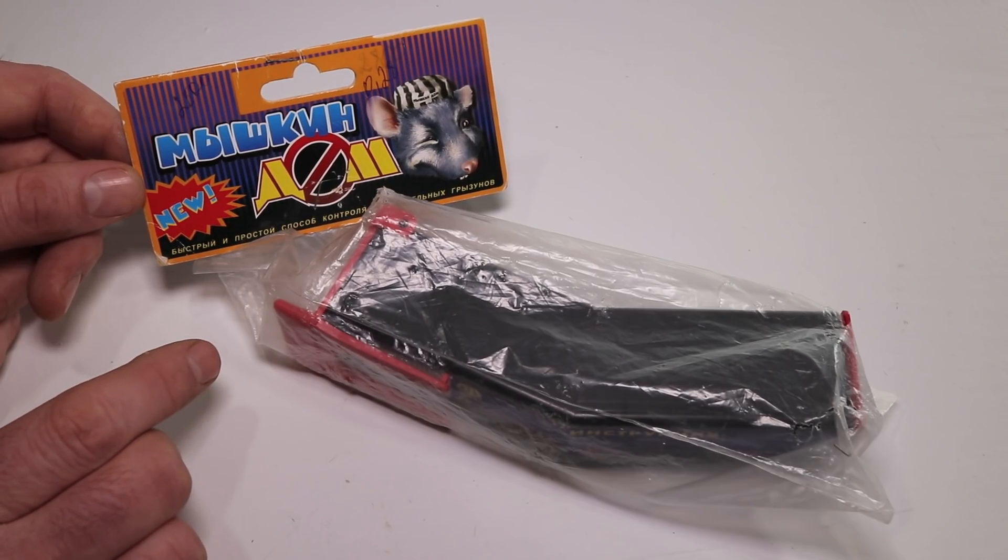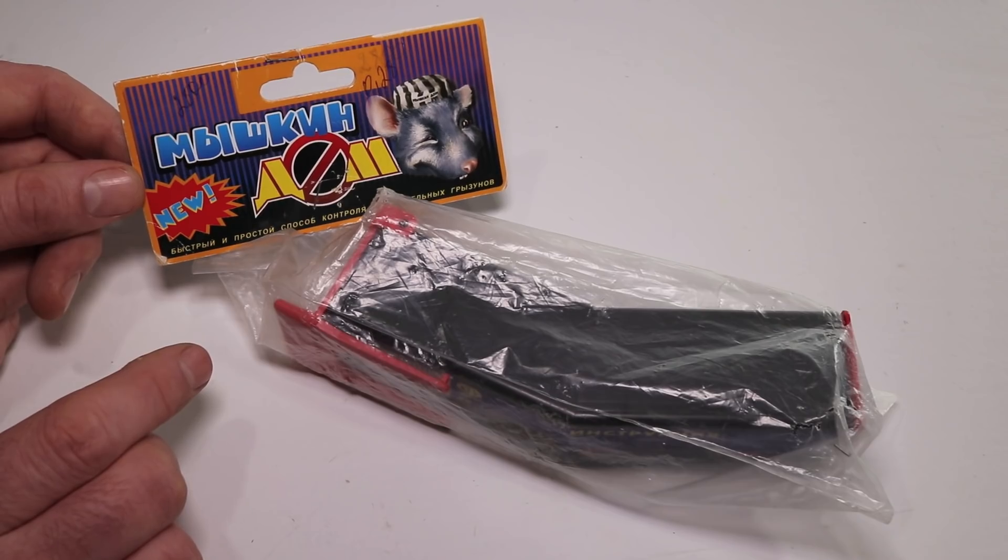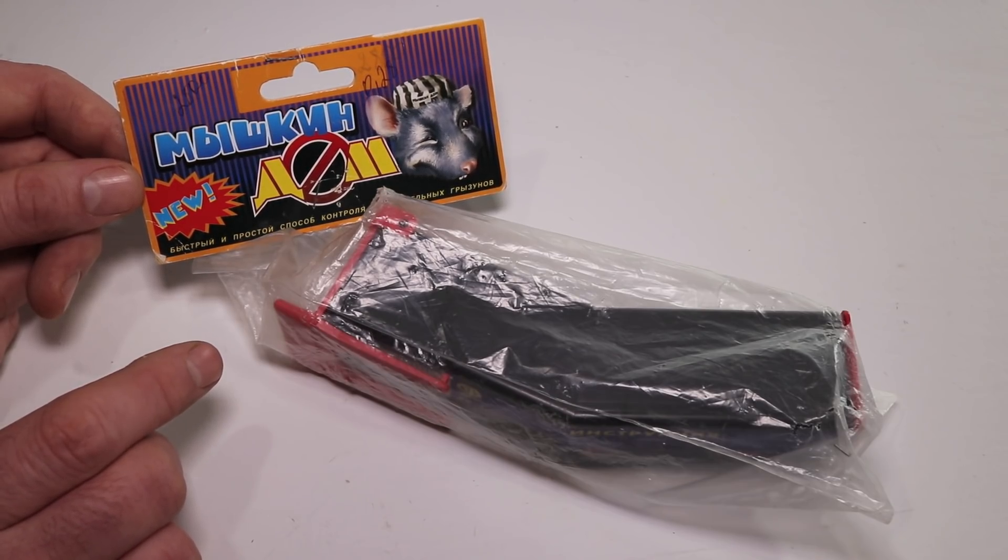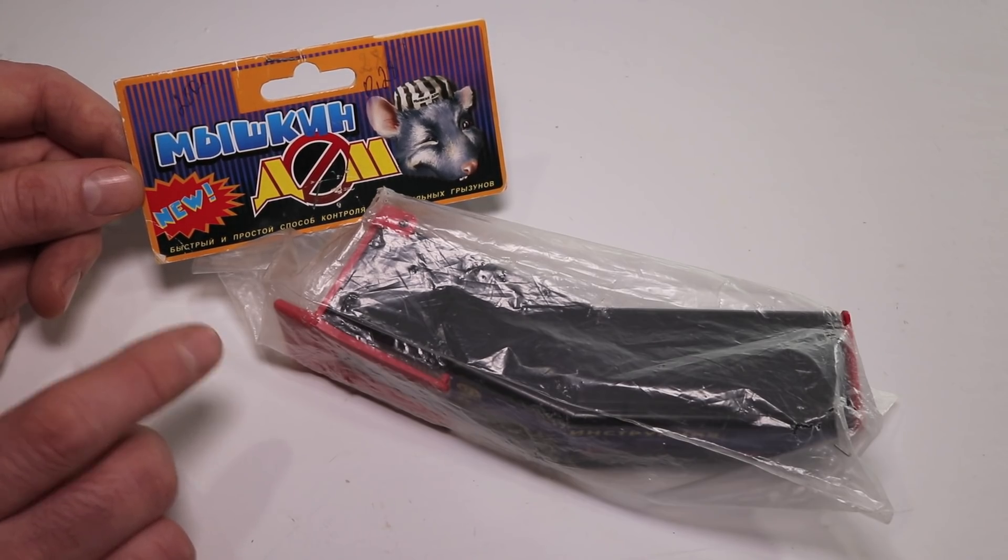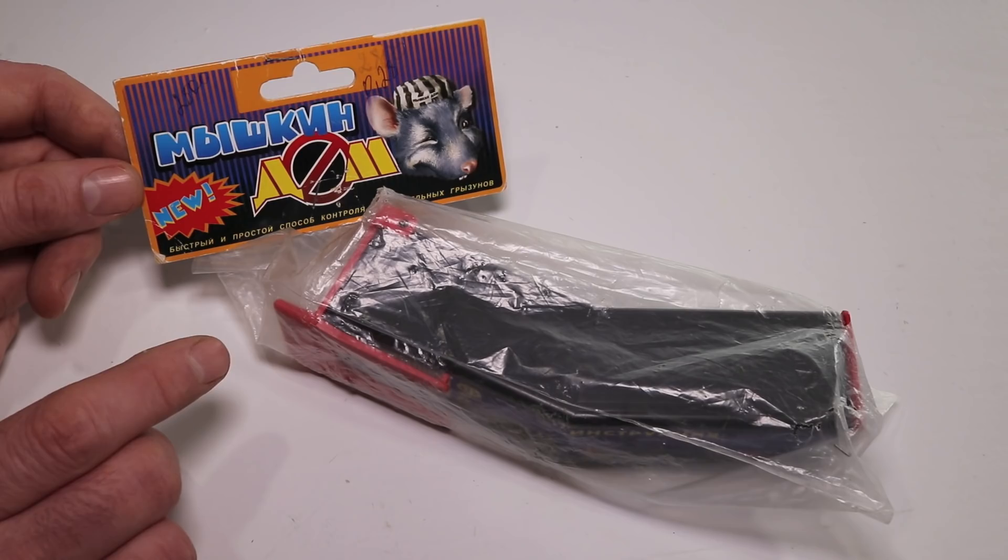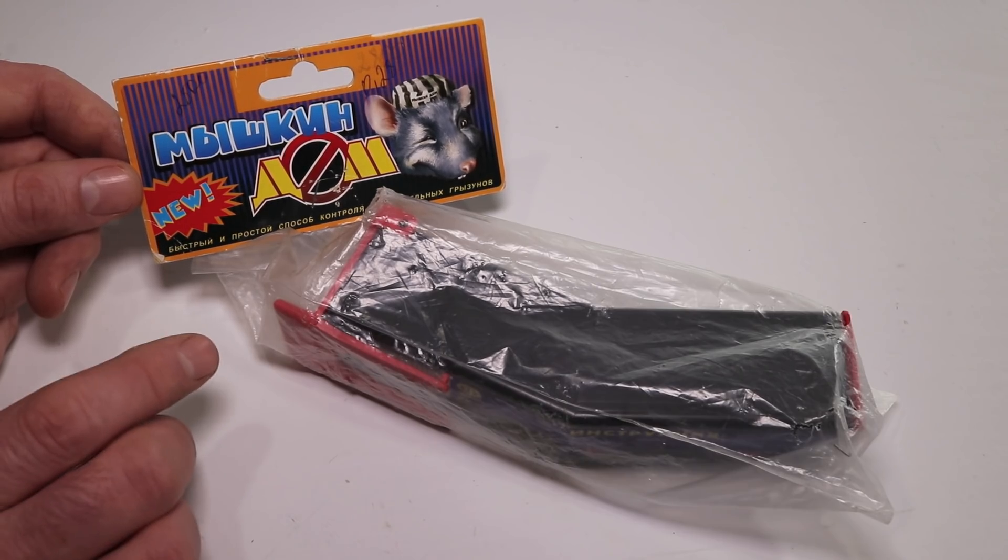Today for Mousetrap Monday, I'm continuing a series featuring rodent traps from around the world. Recently I posted videos showing a rat trap from India and a mousetrap from Finland. This trap comes from Belarus, in a region near Russia, Lithuania, Poland, Ukraine, and Latvia. I haven't featured any traps from this area before.